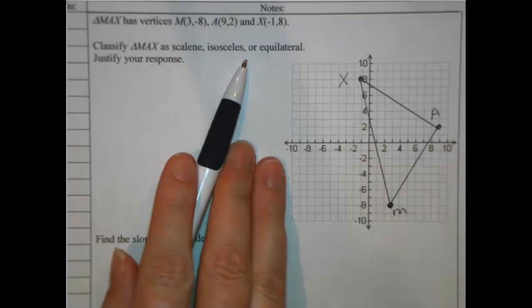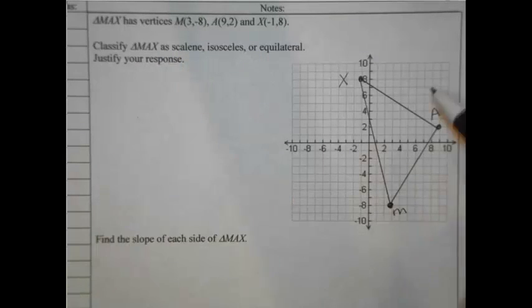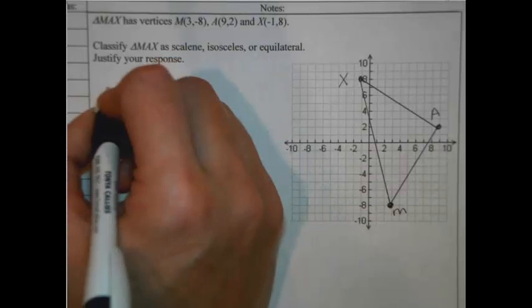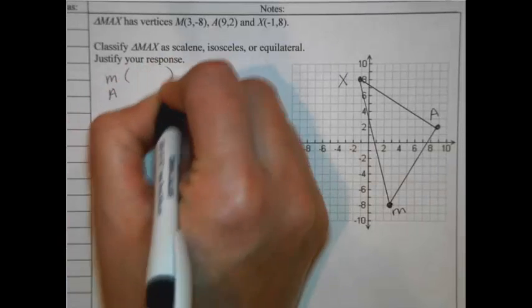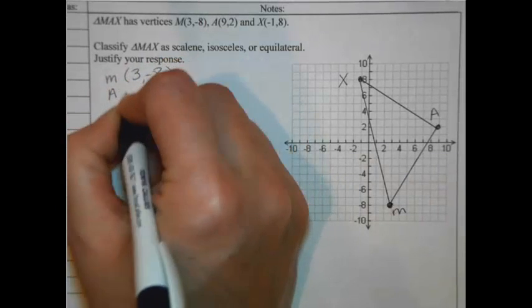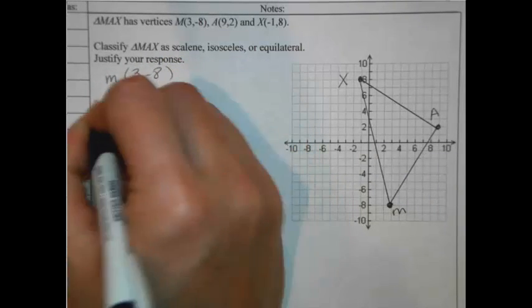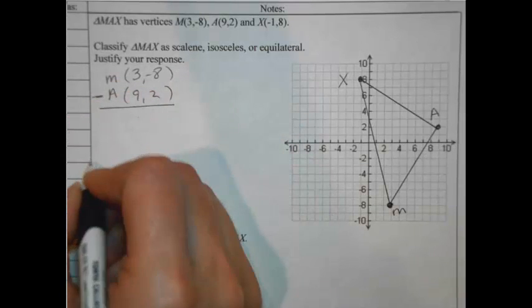We have to classify it as scalene, isosceles, or equilateral. So we have to see if the sides have any option to tick mark these. Do we have any equal sides? Let's find the three distances. So let's start out with M to A. And let me do a point stack here. So M and A on my point stack is (3, -8), with A at (9, 2). I'm going to subtract those and get my key numbers.